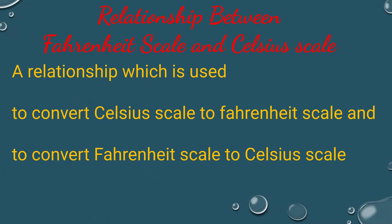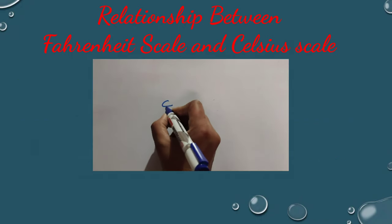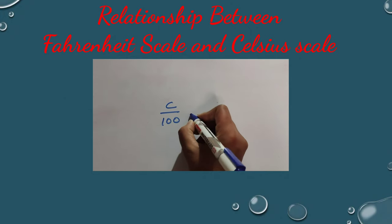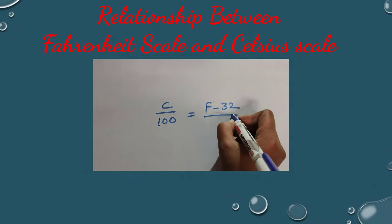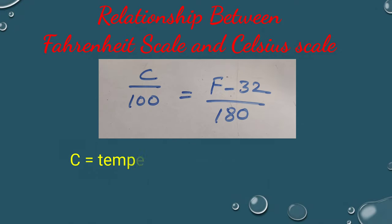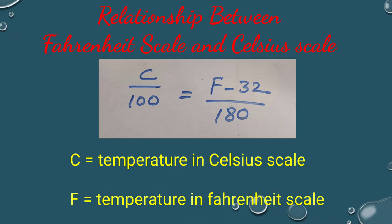The formula is C over 100 equals F minus 32 over 180. In this, C is temperature in Celsius scale and F is temperature in Fahrenheit scale.